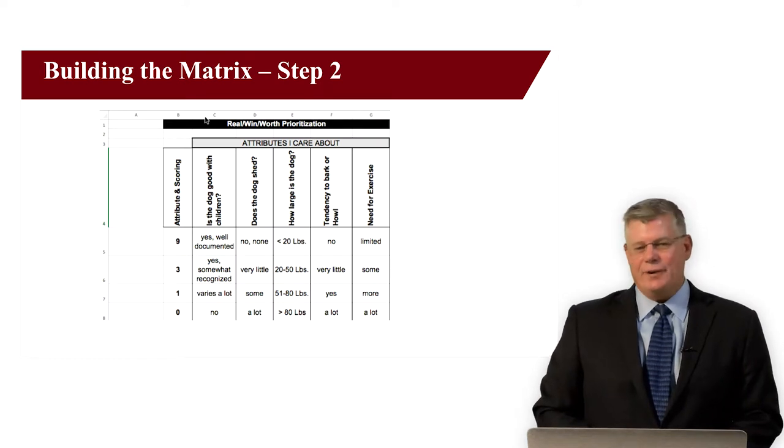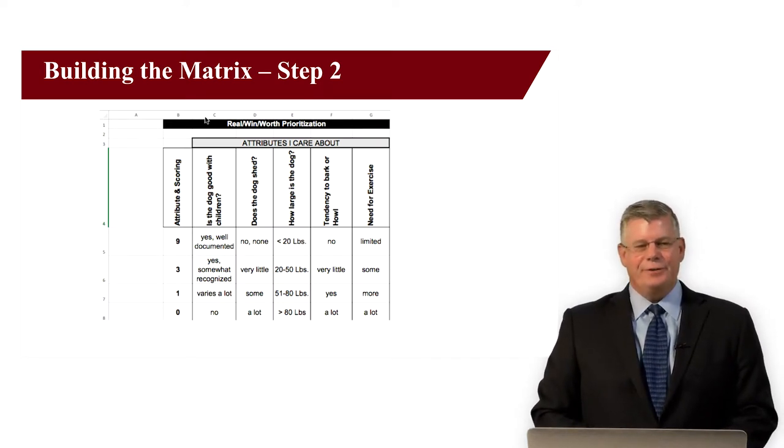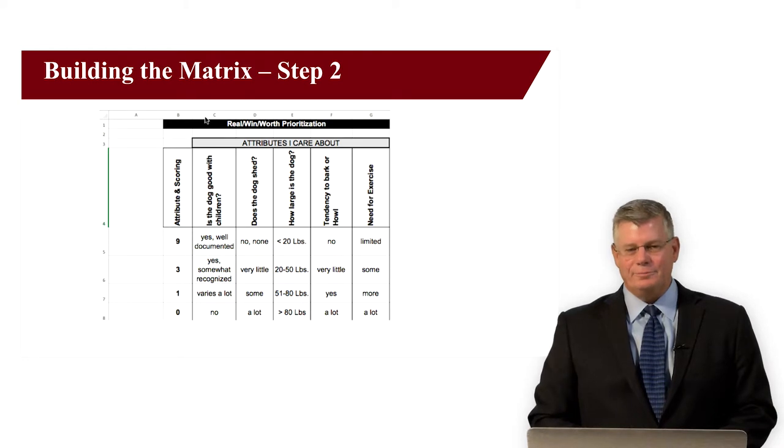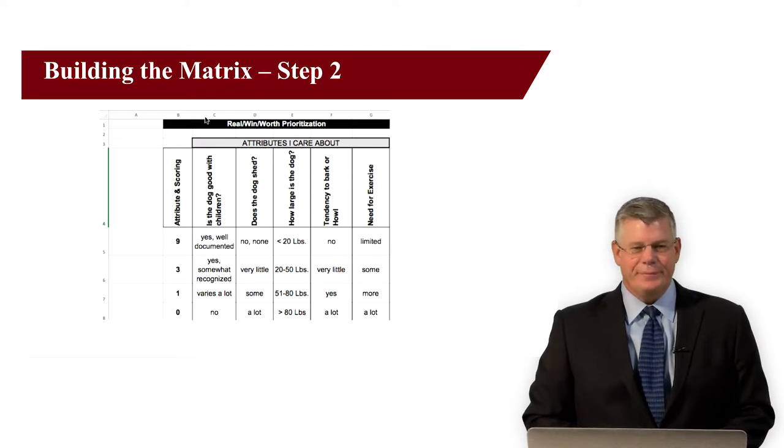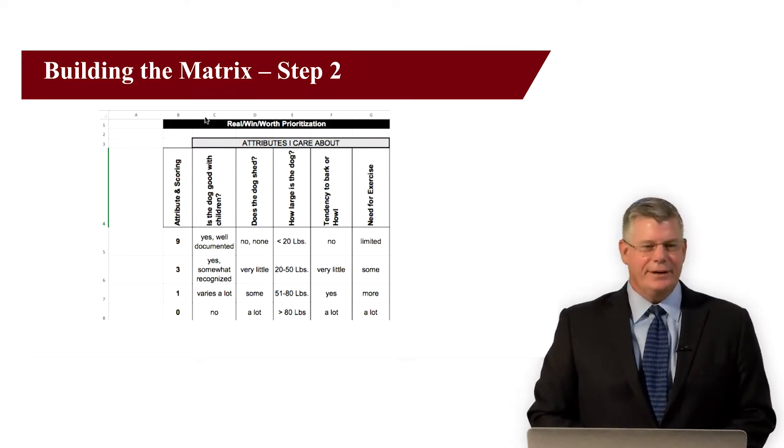Then, for each of these attributes, we added values assigned to ratings 9, 3, 1, and 0. If the attribute was highly positive, like a dog that's exceptionally good with children, it would score a 9, somewhat good a 3, etc.